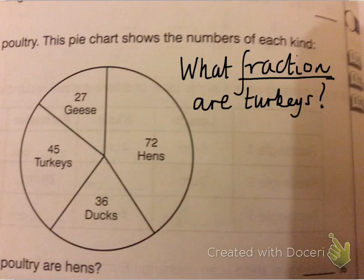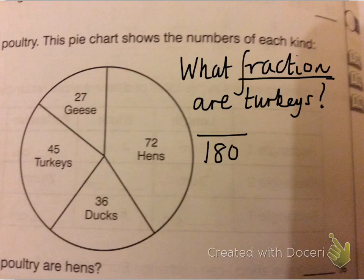The simpler one is where you're asked what fraction are turkeys, for example. Again we've got a total of 180, which can be calculated just by adding up the four values here, here, here and here. We've got 45 over 180.